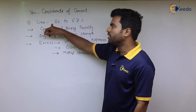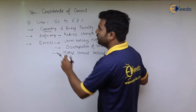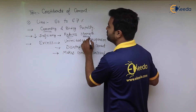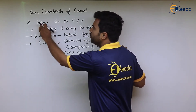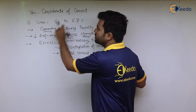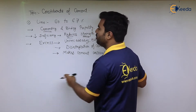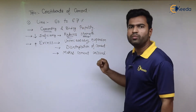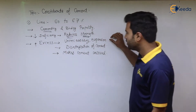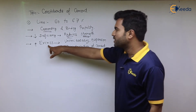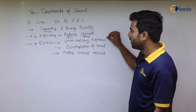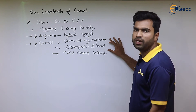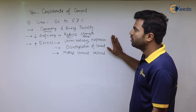If the percentage of lime is deficient, it reduces the cement's strength, so care should be taken to keep it in the range of 60 to 67 percent. Excess lime is also dangerous: it causes unnecessary expansion in the cement, results in disintegration of cement, and makes the cement very unsound.